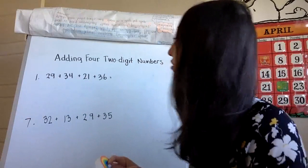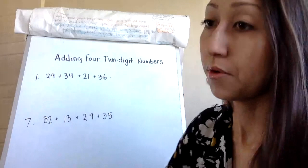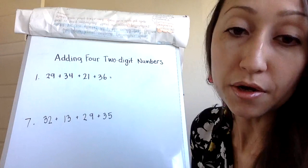The great thing that we can do is that we can rearrange the order. We don't have to keep it this way. So the strategy I want you guys to use today is finding friendly pairs using your make-ten strategy.